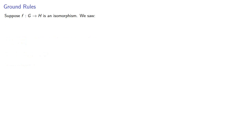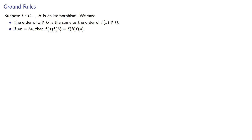We've already seen a couple of important properties of isomorphisms. Suppose F from G to H is an isomorphism. We saw that the order of A in G must be the same as the order of F of A in H. And also, we saw that if A and B commute, then F of A and F of B must also commute. This allows us to find when two groups are not isomorphic.